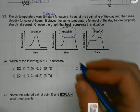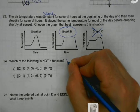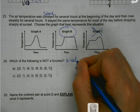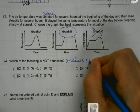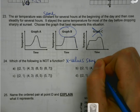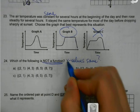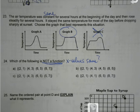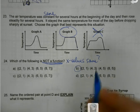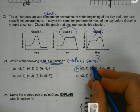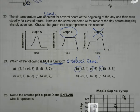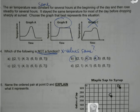Which of the following is not a function? If the x values are the same, that's what not a function would be. Where are some x values the same? Letter B — not the y values, the x values. They're the same, so that one is not a function.